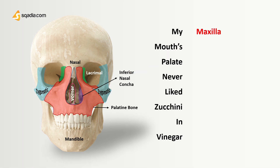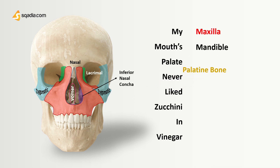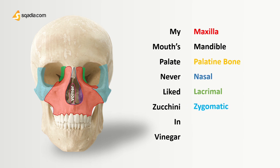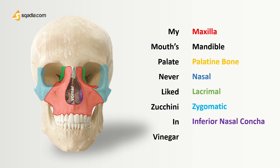My is for maxilla. Mouths is for mandible. Palate is for palatine. Never is for nasal. Liked is for lacrimal. Zucchini is for zygomatic. In is for inferior nasal concha. Vinegar is for vomer. You can find detailed lectures on all these bones at scadia.com.